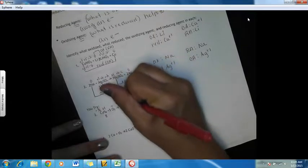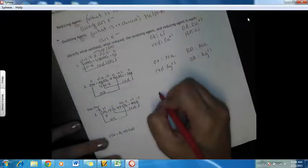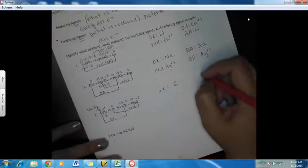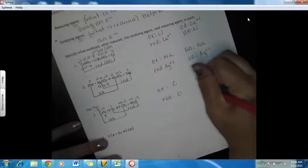We get negative two and plus four, and then negative two and plus one. Nonetheless, carbon goes from a negative to a positive, so it increases its oxidation number — it's oxidized. Oxygen decreases its oxidation number, so it's reduced. What was oxidized was our carbon, and what was reduced was our oxygen. So our oxidizing agent is our oxygen, and our reducing agent is our carbon.